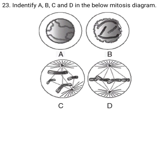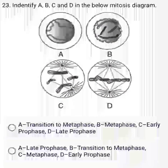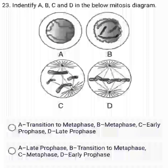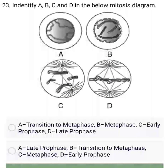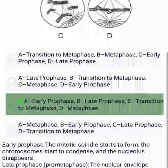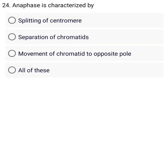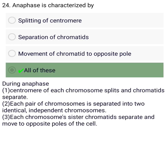C. Attachment of spindle — Identify A, B, C, and D in the below mitosis diagram. Anaphase is characterized by A. Splitting of centromere. B. Separation of chromatids. C. Movement of chromatids to —